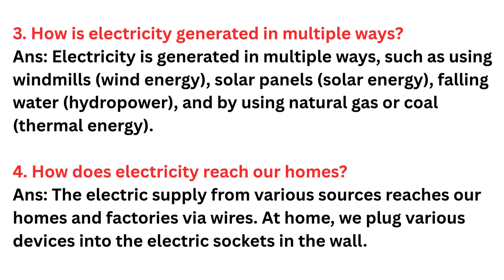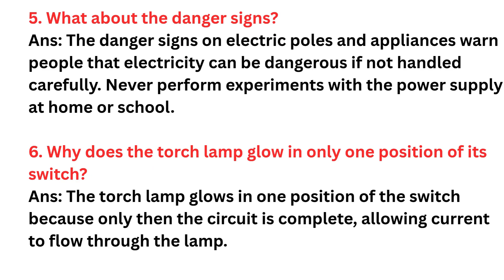Question number four: How does electricity reach our home? Answer: The electric supply from various sources reaches our homes and factories via wires. At home, we plug various devices into the electric sockets in the wall. Question number five: What about danger signs? Answer: The danger signs on electric ports and appliances warn people that electricity can be dangerous if not handled carefully. Never perform experiments with the power supply at home or school.